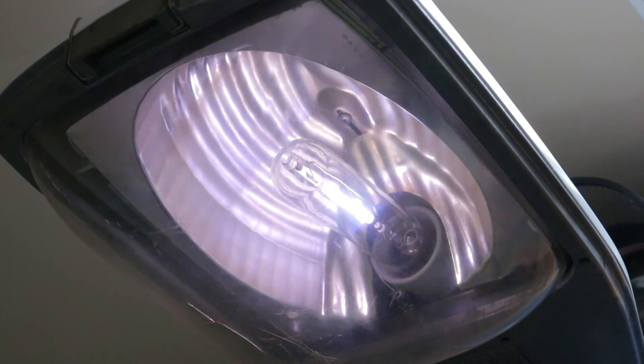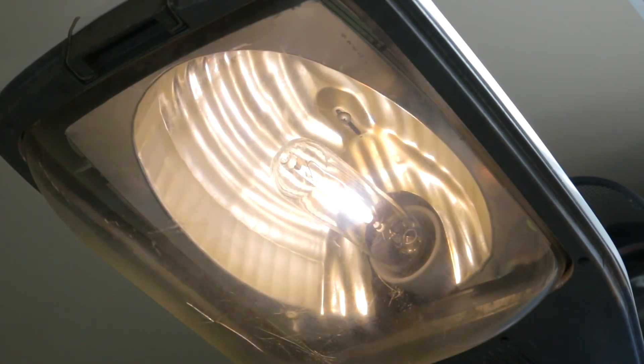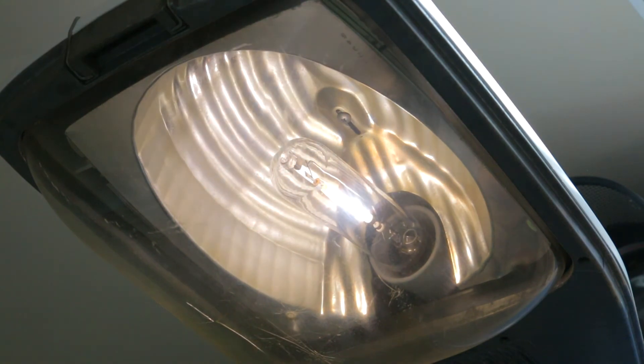You'll notice it starts white. That's because these GE Lukalox lamps have a very high xenon pressure in the gas fill. Once the sodium starts to vaporize, that's when you start to get the characteristic golden yellow from the high-pressure sodium.